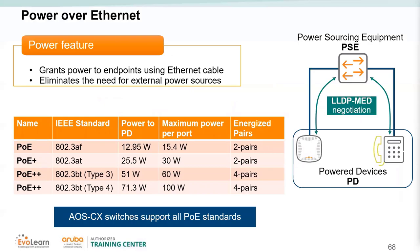Power over Ethernet is a key feature in edge infrastructure. We have different power classes: PoE+ (802.3at) is the most commonly used standard. PoE++ covers Type 3 at 60 watts max and Type 4 at 100 watts max. Which you use depends on your platform and what you're trying to power.